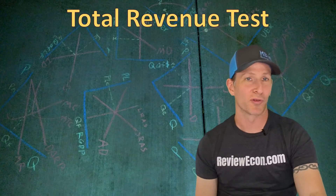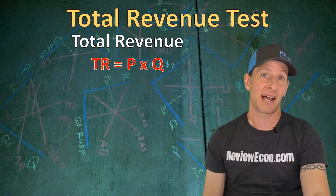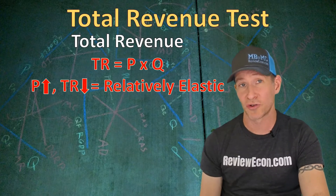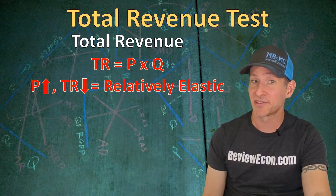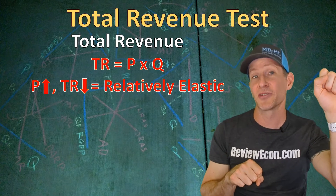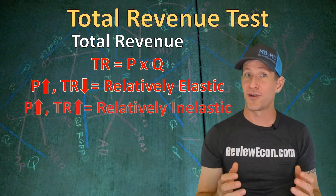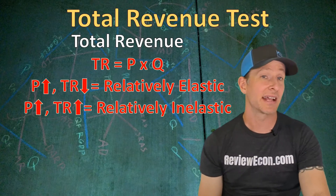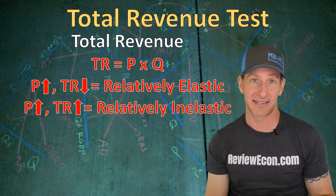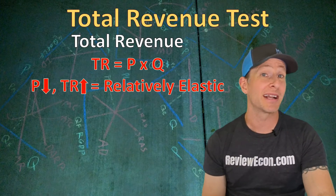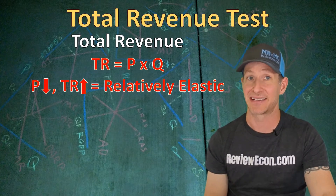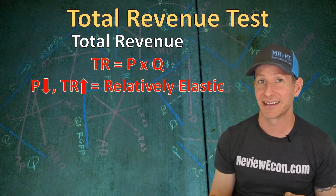The fifth test is the total revenue test. The formula for total revenue is the price of the product times the quantity sold. If price increases and total revenue decreases, the demand curve is relatively elastic — price and total revenue are going in opposite directions, stretching it out like an elastic band. If price increases and total revenue also increases, they're going in the same direction, meaning the demand curve is relatively inelastic. Likewise, if price decreases and total revenue increases, the demand curve is relatively elastic.